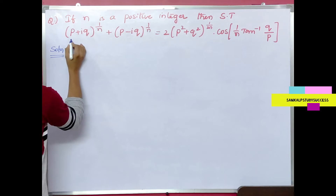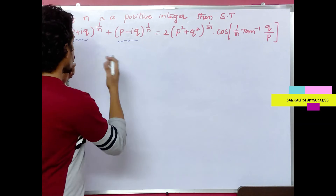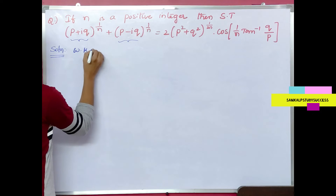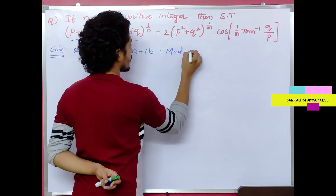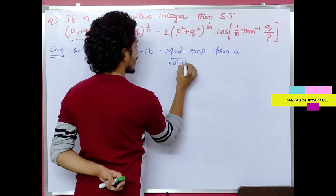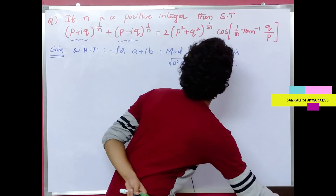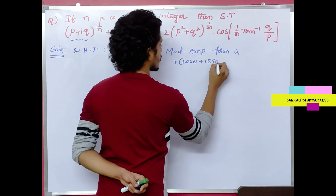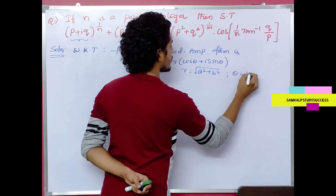First of all, for p + iq we need the modulus-amplitude form. We know that for a + ib, the mod-amplitude form is r(cosθ + i sinθ), where r = √(a² + b²) and θ = tan⁻¹(b/a).